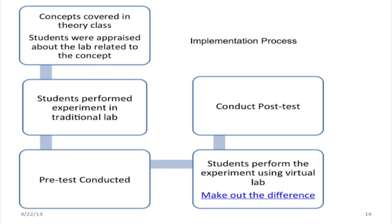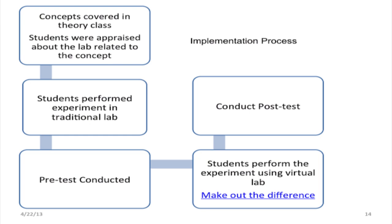The implementation process was: I covered the concepts in the theory class and then informed the students about lab-related activities. Then the students performed the experiment in the traditional lab. I conducted a pre-test of all the students to find out whether they had understood the concepts and were able to apply them or make decisions on the constructs. Then I made the students perform the experiment using virtual labs.